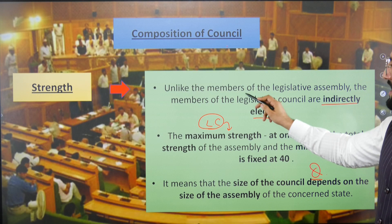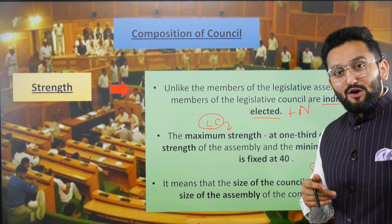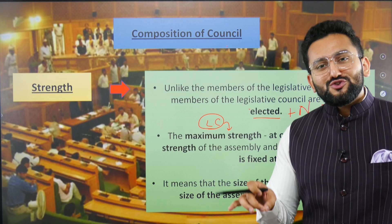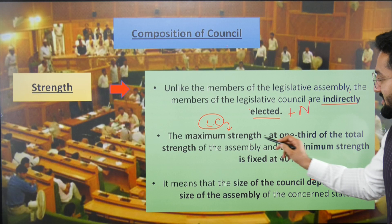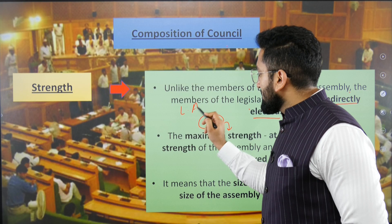Regarding composition of the legislative council: unlike members of legislative assembly, members of legislative council are indirectly elected plus nominated. The maximum strength of the legislative council cannot be more than one-third of the total seats of the legislative assembly, and the minimum strength is 40. For example, if the total strength of a legislative assembly is 90, the maximum strength of the legislative council of that state would be 30.